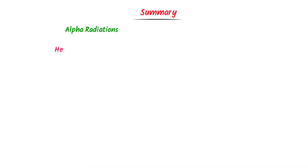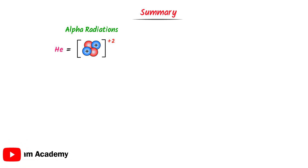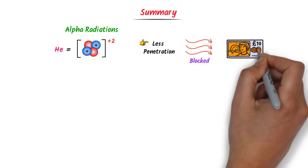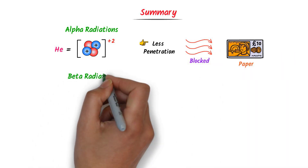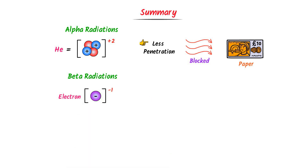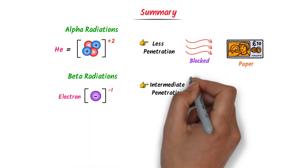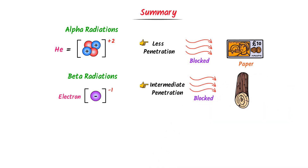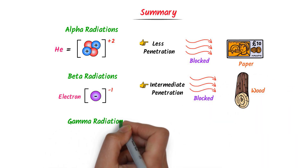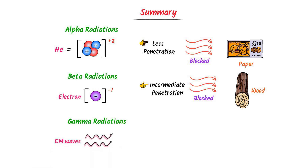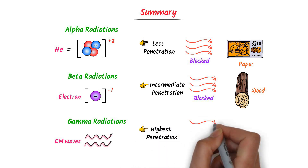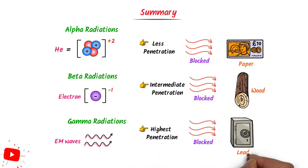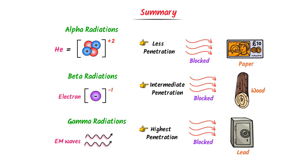To summarize: alpha particles are like the nucleus of helium with double positive charge, less penetrating power, and can be stopped by paper. Beta particles are like electrons with a negative one charge, moderately penetrating power, and can be stopped by wood. Gamma radiations are like electromagnetic waves with no charge, high penetrating power, and can be stopped by a thick sheet of lead.